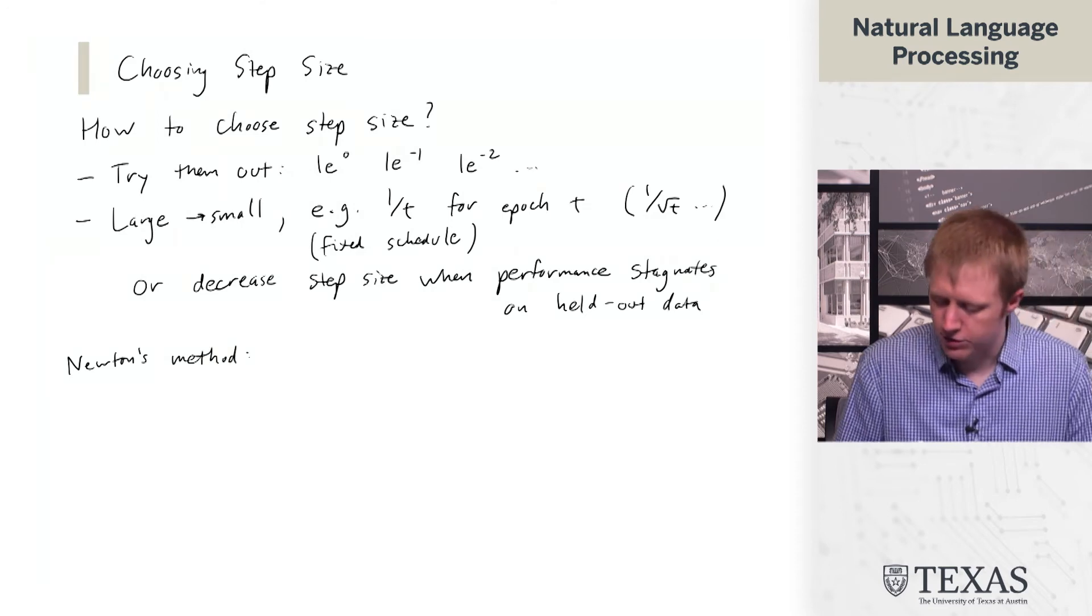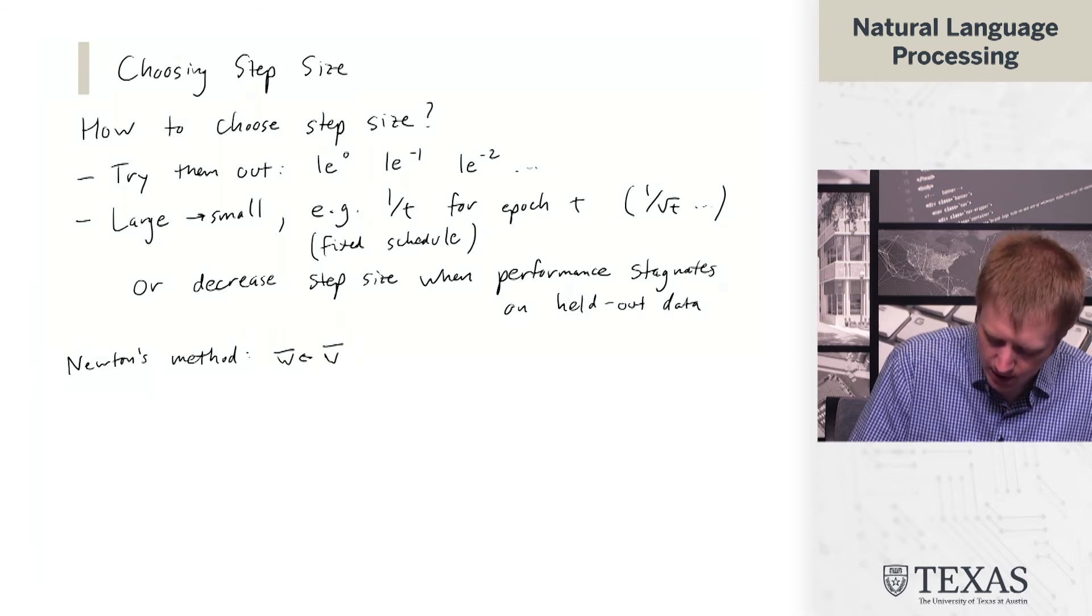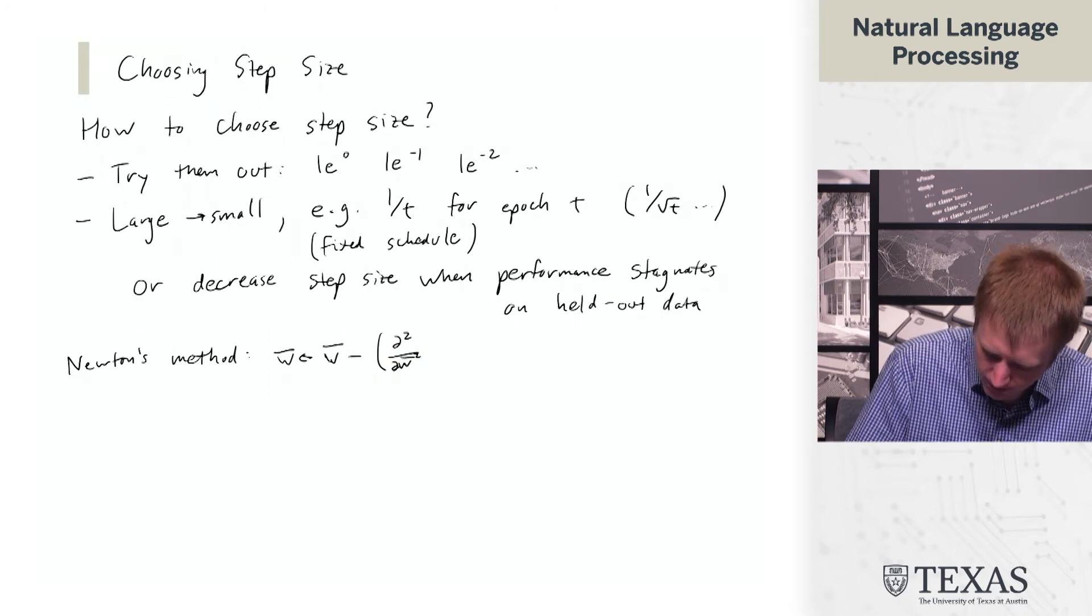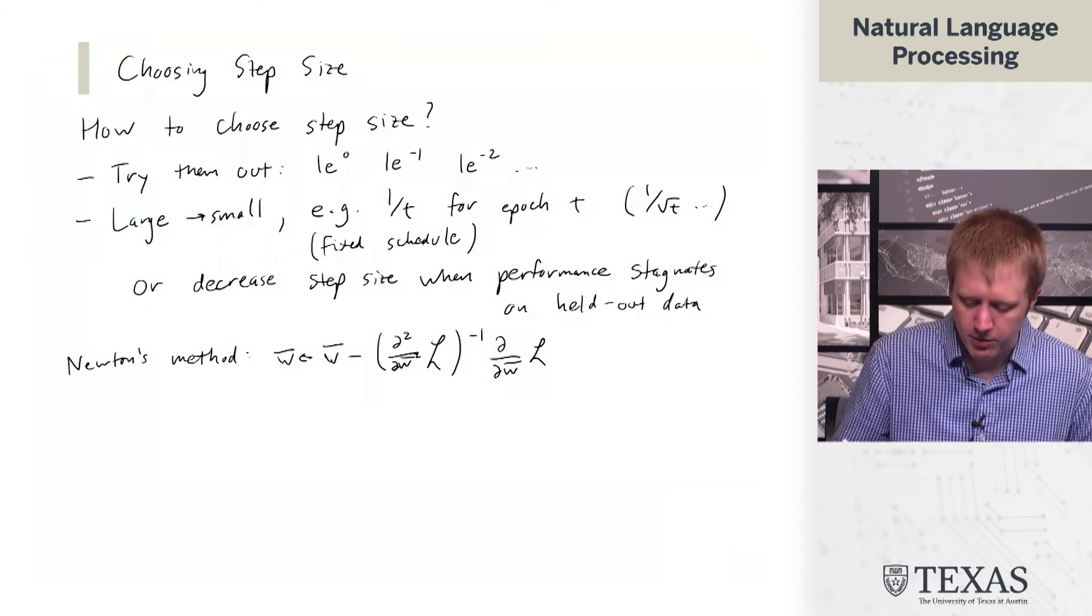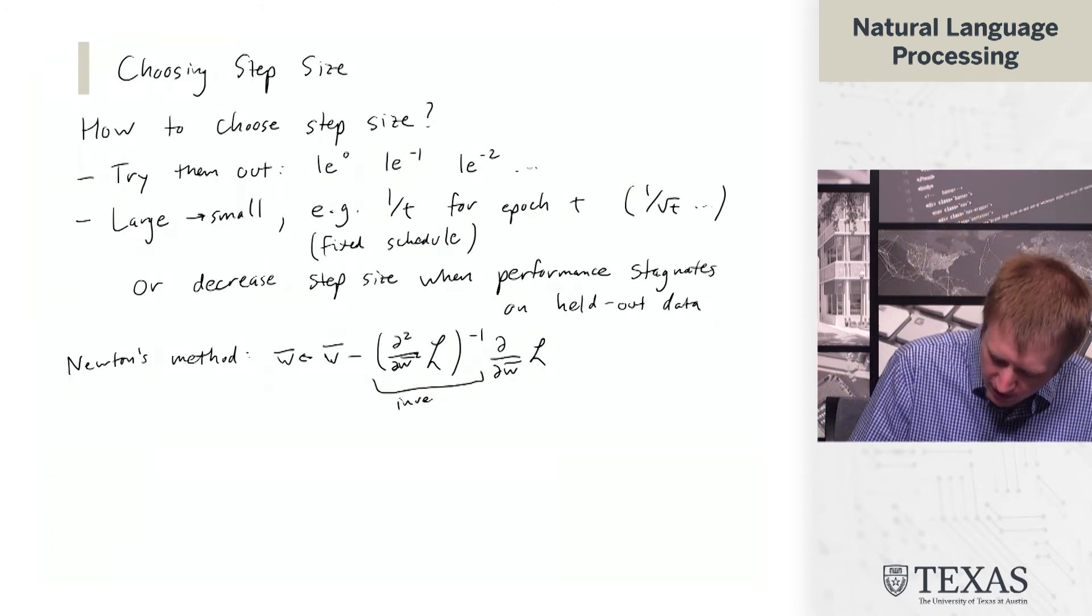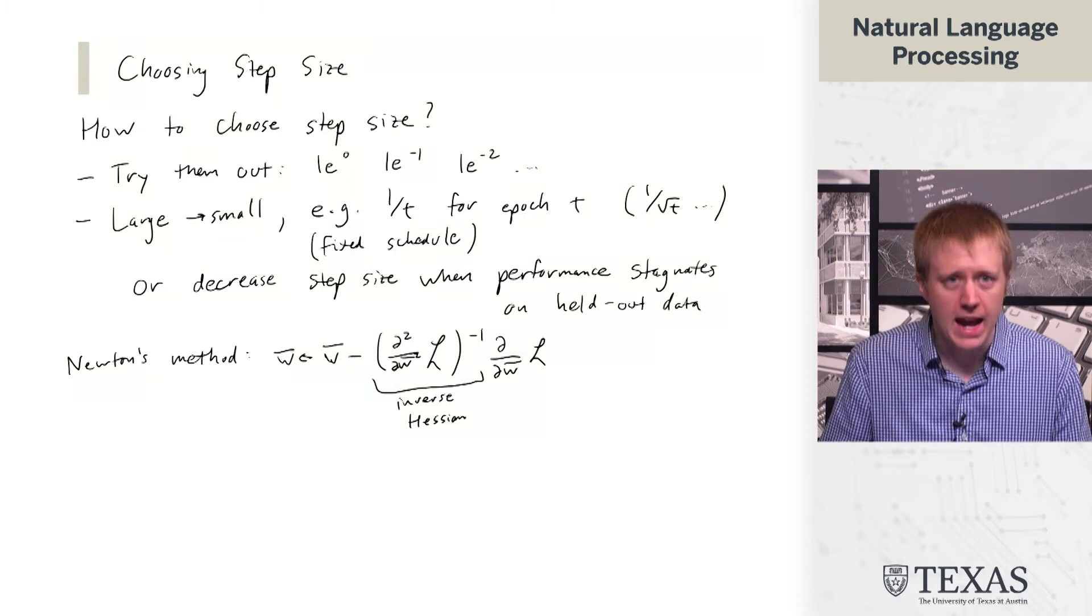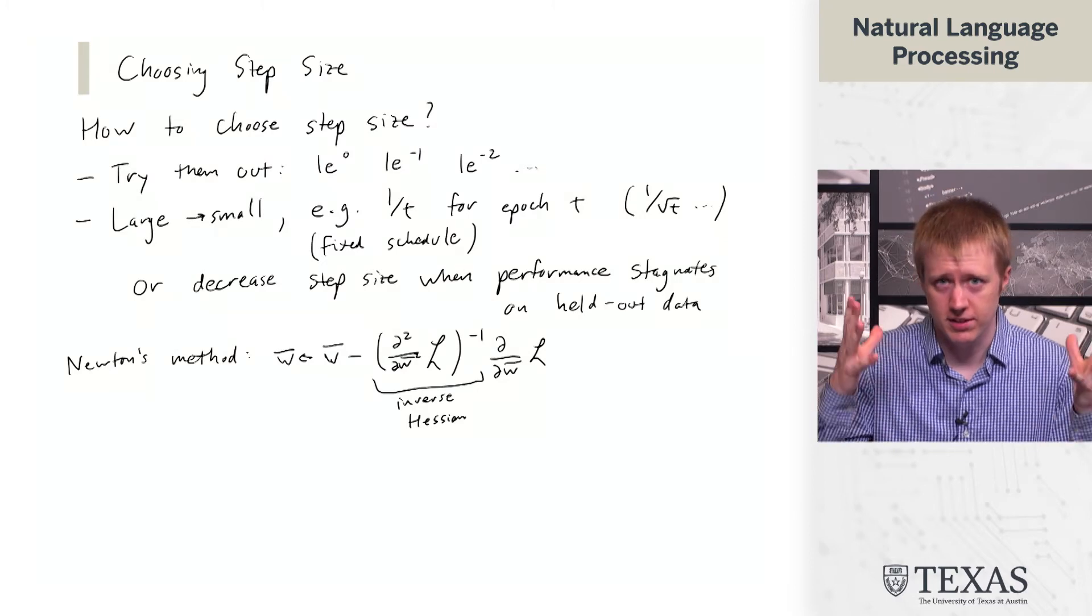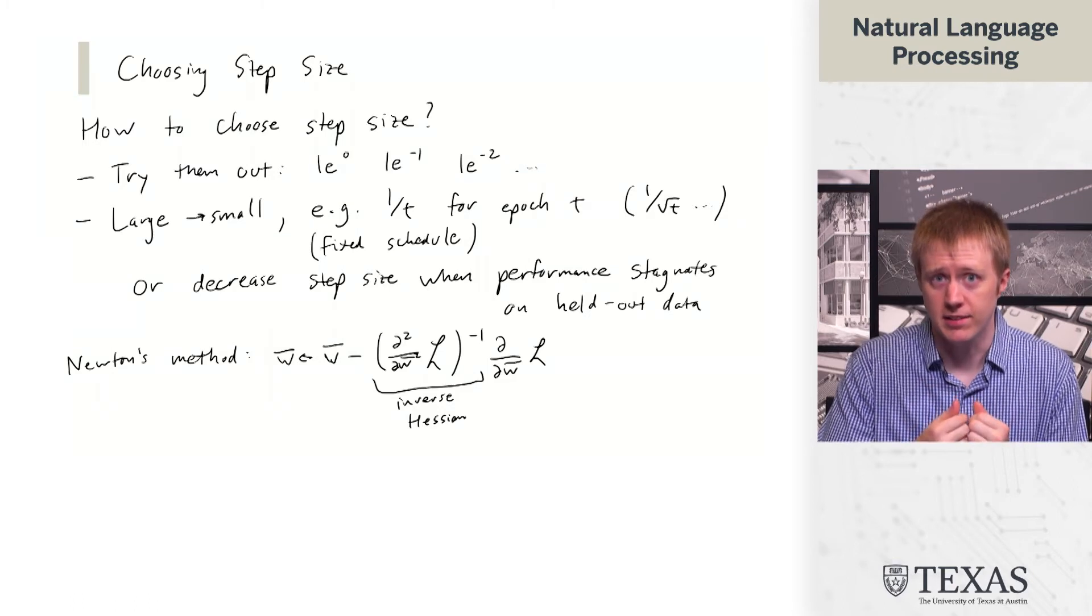We want to be smarter about this. We're not going to discuss it in too much detail, but the smarter thing to do here is something called Newton's method. This is something called the inverse Hessian, and the idea here is that we use the curvature of the space, or of the objective function, to figure out what the right step size is.